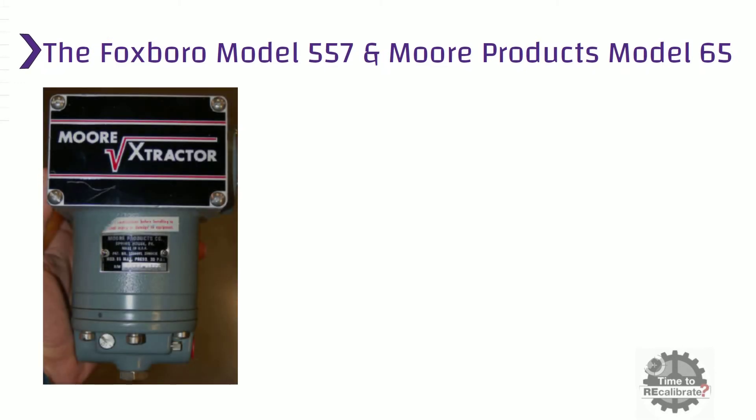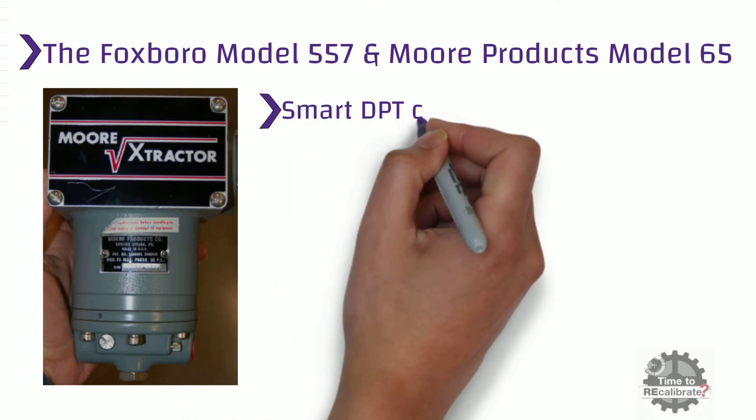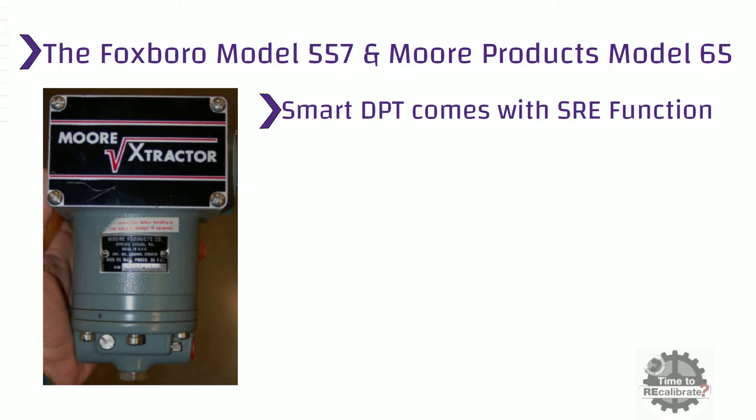As you can see, this is the Moore square root extractor which was used as square root extractor. Nowadays, all the smart DP transmitters come with square root extractor function. And to convert square root signal into linear flow signal, user has to select this function from transmitter.